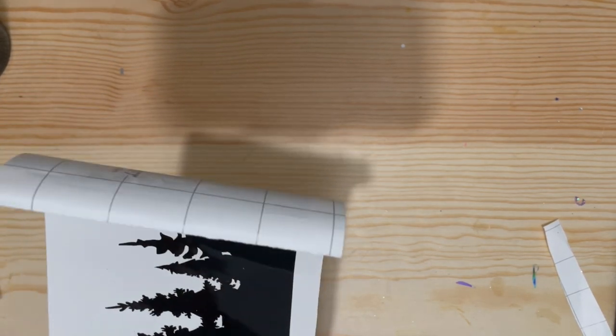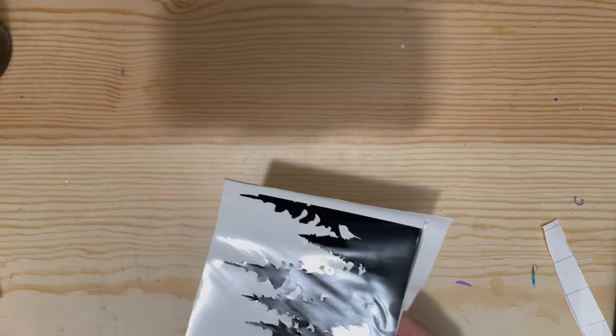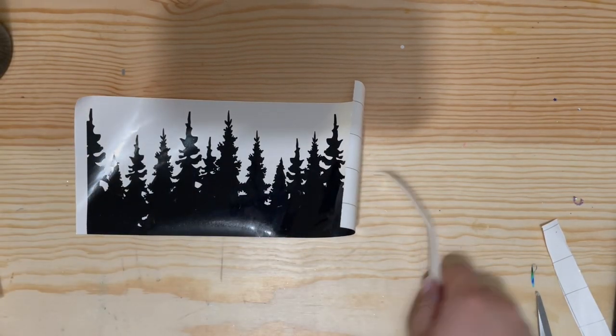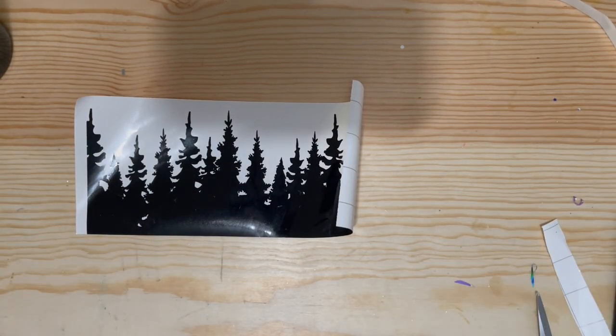I am just going to cut off the bottom of this to make sure that I can get this lined up on my tumbler. And then once I get this on here, or once I cut it off, I'm going to put the transfer tape and just apply my decal to the tumbler.